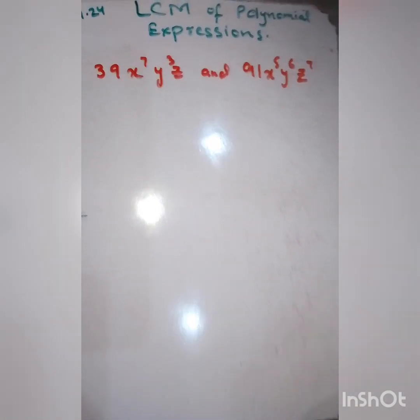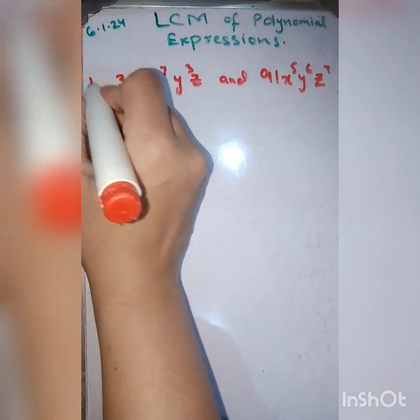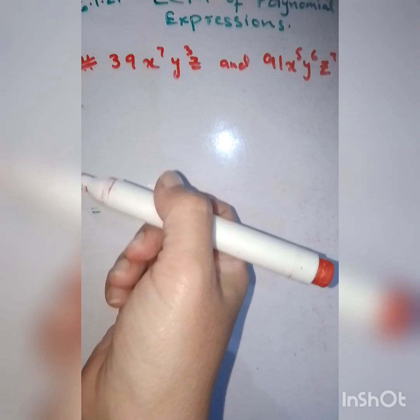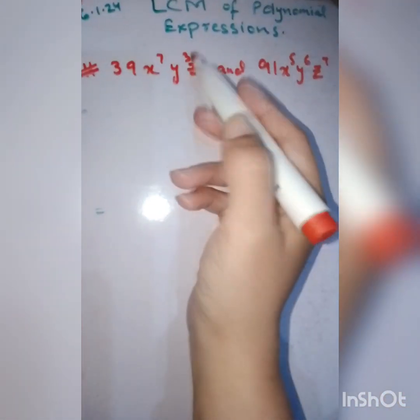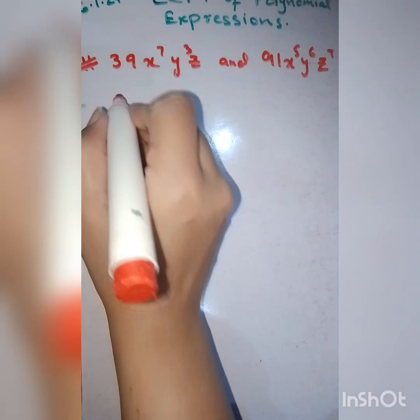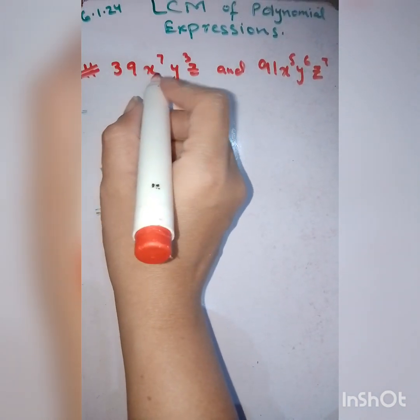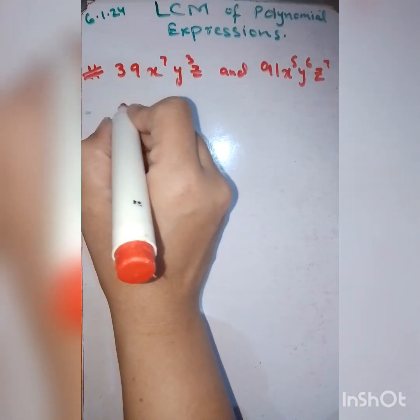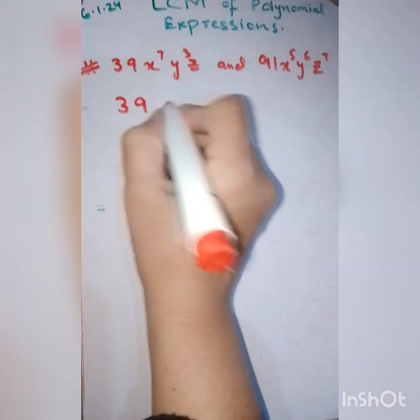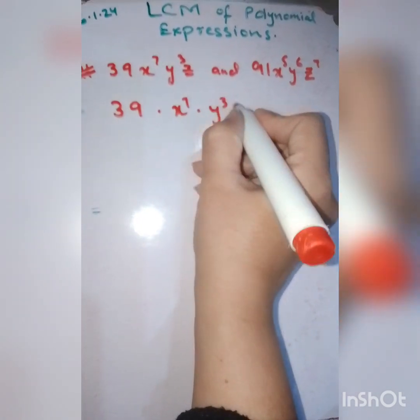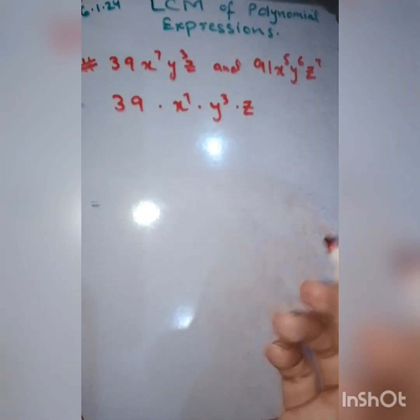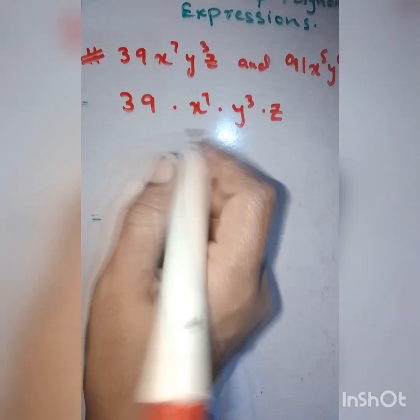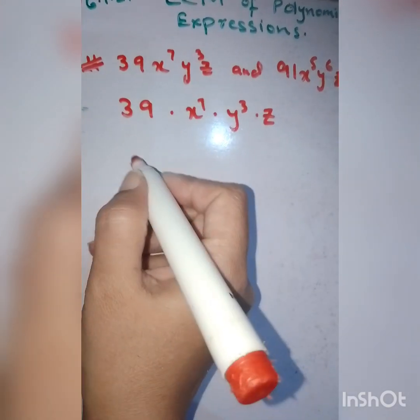Here I have written two terms. This is what we are going to find using the LCM. First, I'm taking 39x raised to the power 7, y raised to the power 3, and z raised to the power 1. So write simply 39x^7y^3z and break it up into factors.